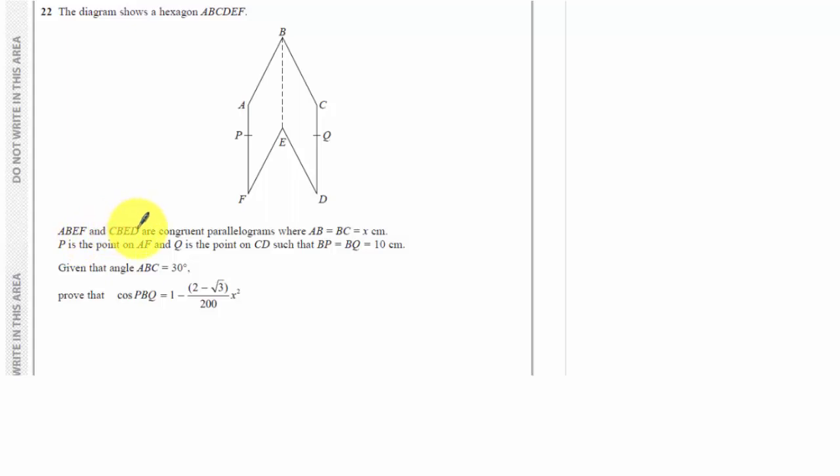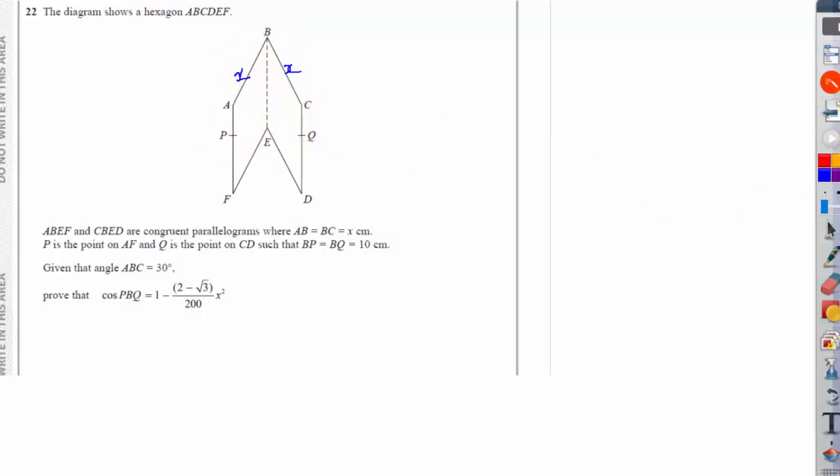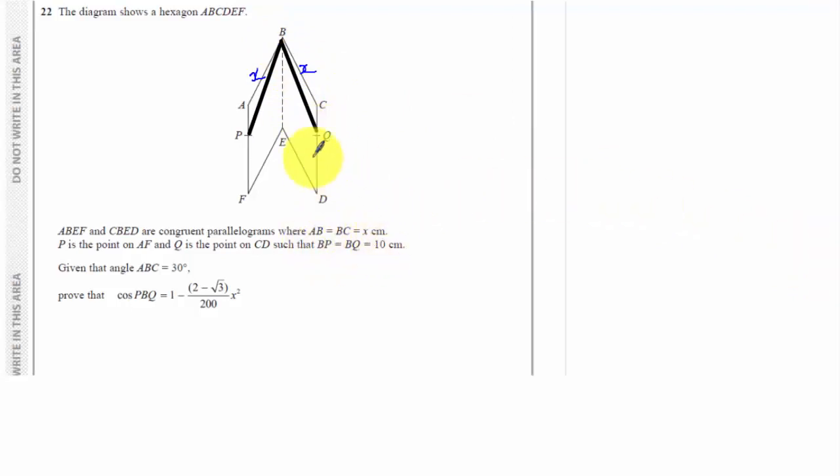ABEF and CBED are congruent parallelograms where AB equals BC equals X centimeters. I'm just going to write that in. So AB and BC are the same length. P is a point on AF and Q is a point on CD such that BP and QP are 10.